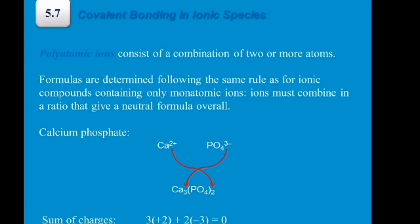To verify that calcium phosphate is electronically neutral: 3 calcium ions times +2 gives +6, and 2 phosphate ions times −3 gives −6. The sum is +6 plus −6 equals zero, confirming the compound is electronically neutral.